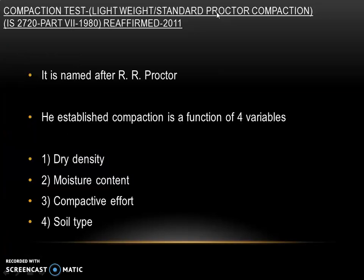The standard proctor test is done as per IS 2720 Part 7, 1980. This test is named after R.R. Proctor, who established that compaction is a function of four variables: dry density, moisture content, compactive effort, and soil type.